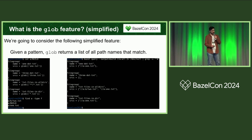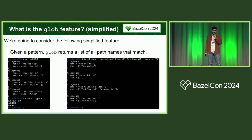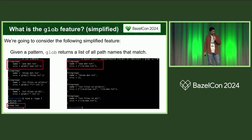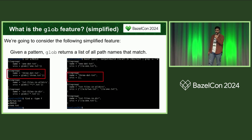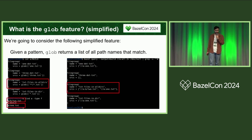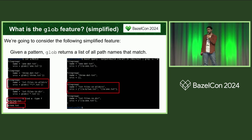Consider the glob feature: given a pattern, return a list of all the path names that match the pattern. Here we have a glob with a pattern looking for an explicit file path, 1.txt — the file exists, so it matches. Here, same thing but the path does not exist, so there are no matches. And here we're doing a recursive glob — that's the star star — looking for all files that end in .txt in all subdirectories. There are two: one in the current directory, and one in subdirectory B.